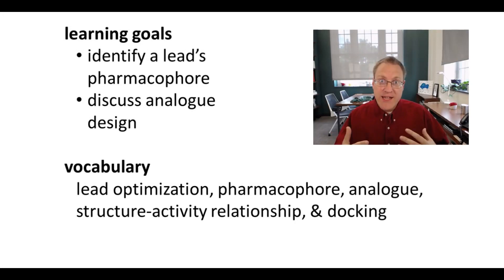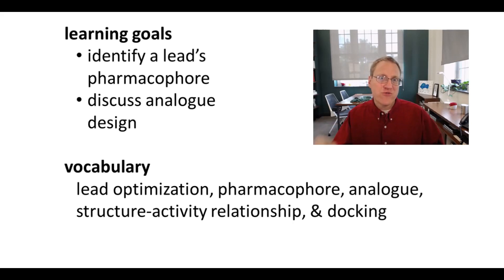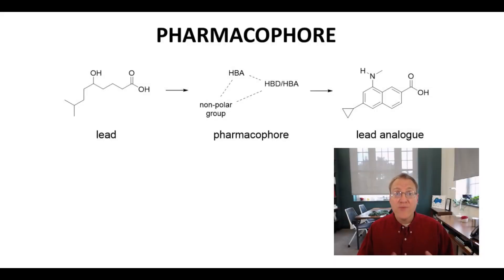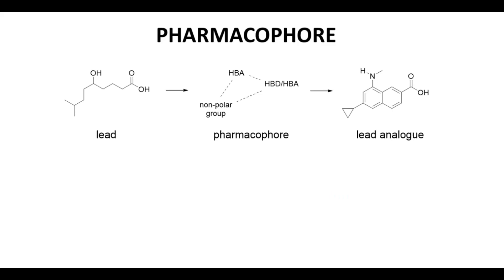As we get into the ideas of lead optimization, we need to talk about what a pharmacophore is. We need to identify a pharmacophore, and we need to think about how we make structural changes and how that's going to lead us to a drug. Once we have selected our lead, we then have a challenge: we need to figure out why does this lead bind to our target protein? This minimal feature set for binding is something called the pharmacophore of a lead.